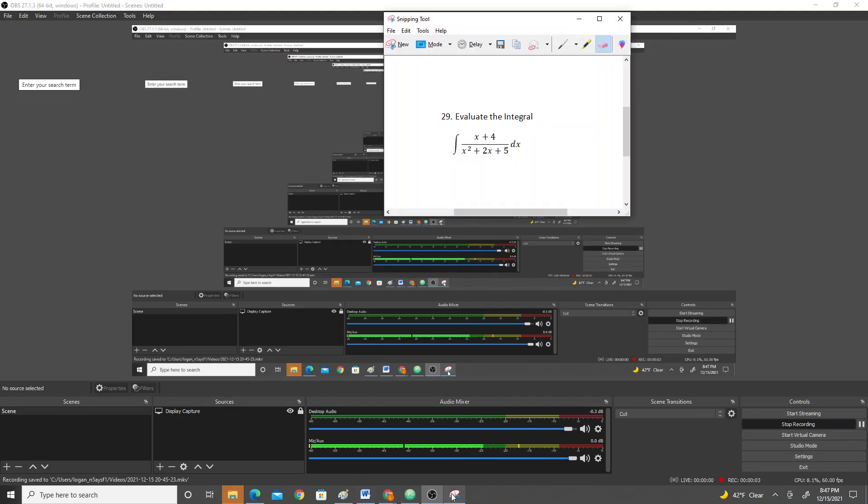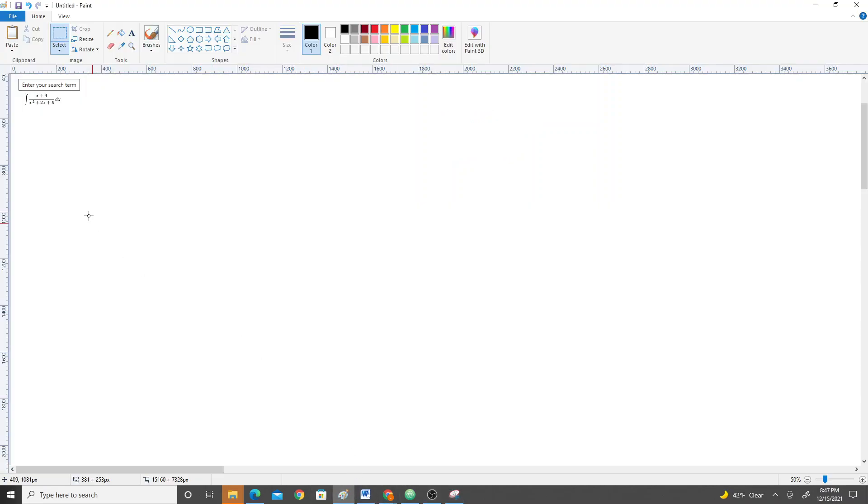Hello YouTube, I have a problem for you guys today. I have this integral of x plus 4 over x squared plus 2x plus 5. So complete the square is required because you can't factor the denominator over any integers.